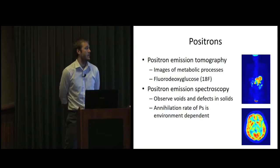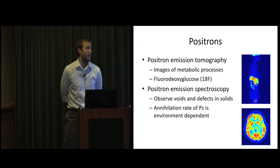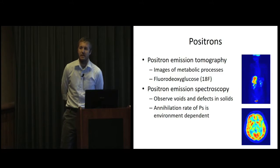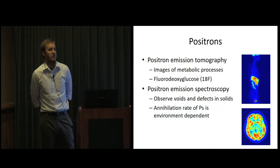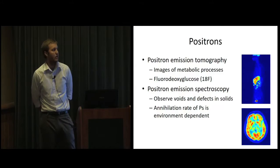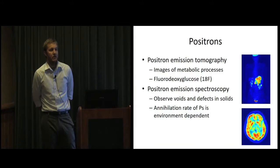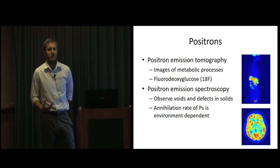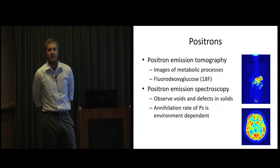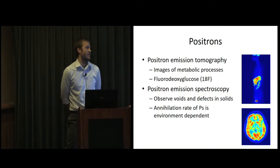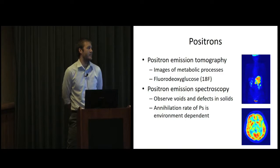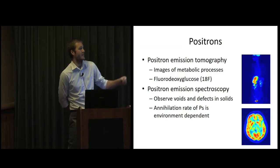The other big application is positron emission spectroscopy. So that's used to observe voids and defects in solids. So like in a metal, we have pretty much free electrons. And so positrons are going to annihilate very, very quickly in that type of environment. But if there's a defect or a void in there, the positron can form positronium in these voids or these defects. And the annihilation rate goes down, and that's measurable. And so positrons get used in other places too, in astrophysics. And someone's trying to even make an annihilation laser. But these are the two main ones.